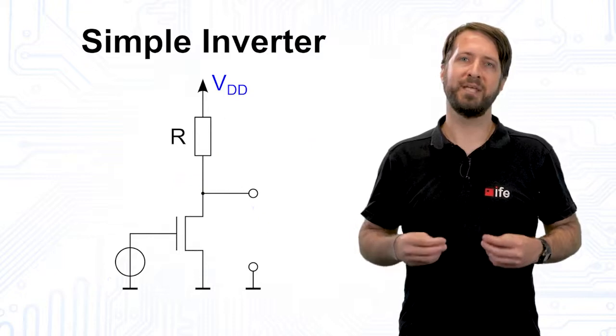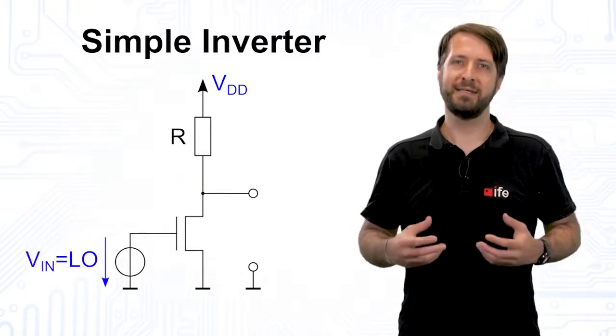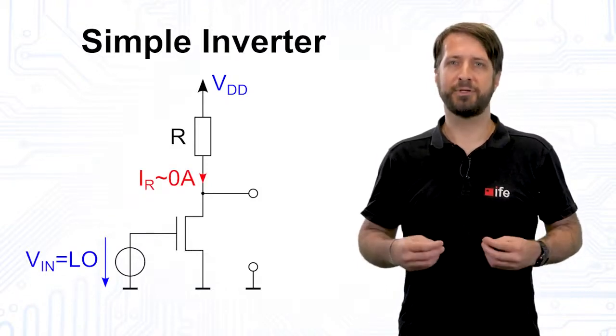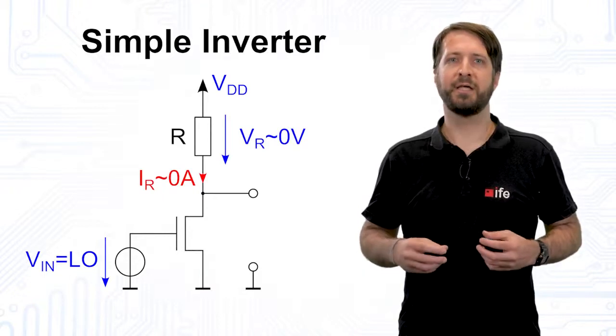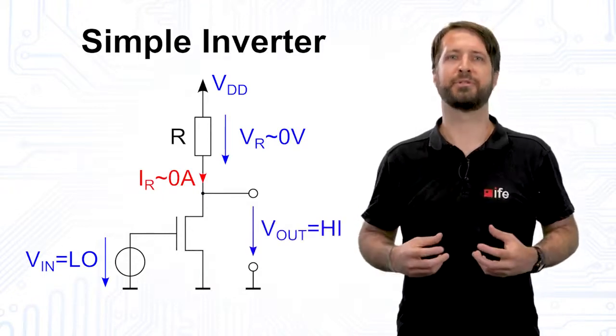Inversely, when the input level is low, the NMOS is open and ideally no current will flow. Since there is no current, no voltage will drop at the resistor and the output is therefore pulled up towards the supply voltage.